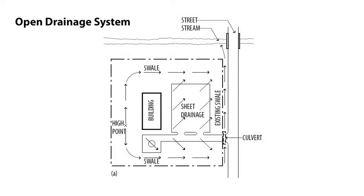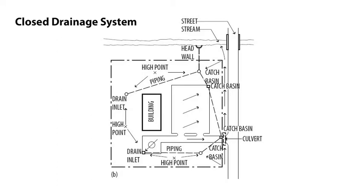The components of an open system may include swales, gutters, channels, culverts, and detention, retention, sediment, or infiltration basins. In designing the system, consideration must be given to the volume and velocity of runoff to prevent swale erosion, and to the means of controlling discharge at the outlet in order to collect sediment if necessary. Flow energy must also be dissipated to prevent erosion.